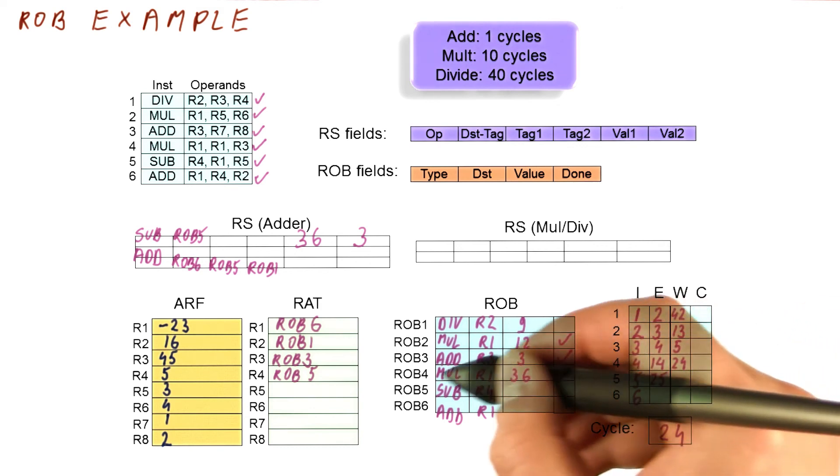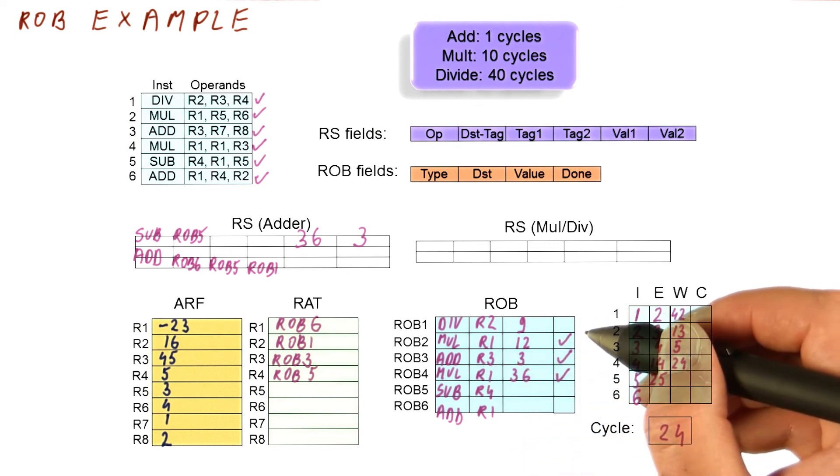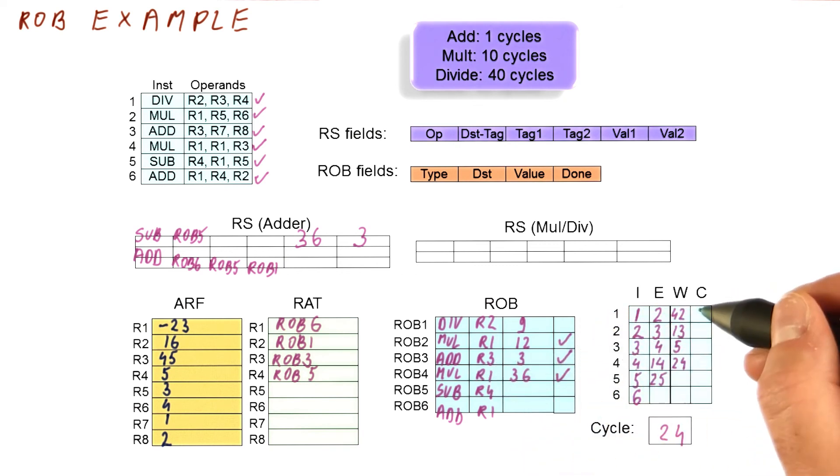And this concludes what happens with this multiplication instruction as far as pre-commit stuff is concerned. It cannot commit yet, again, because we need all of these to commit before it can commit. So it's still going to be at least cycle 43 before we consider committing anything.